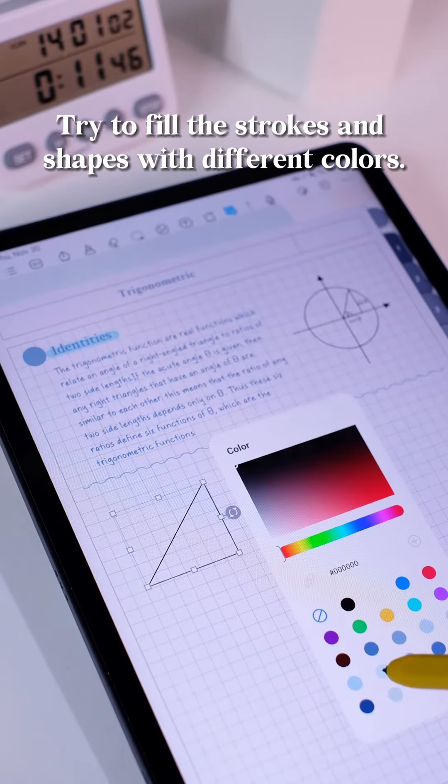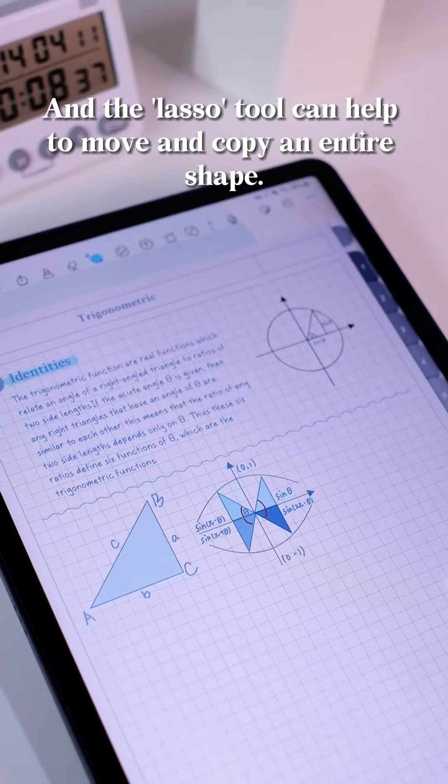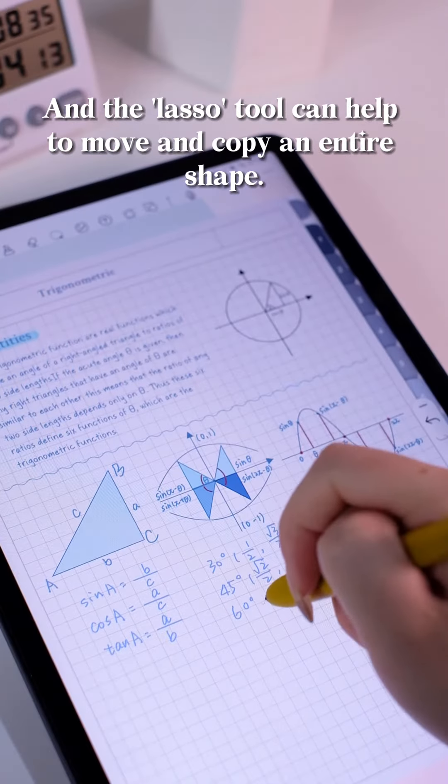Try to fill the strokes and shapes with different colors, and the lasso tool can help to move and copy an entire shape.